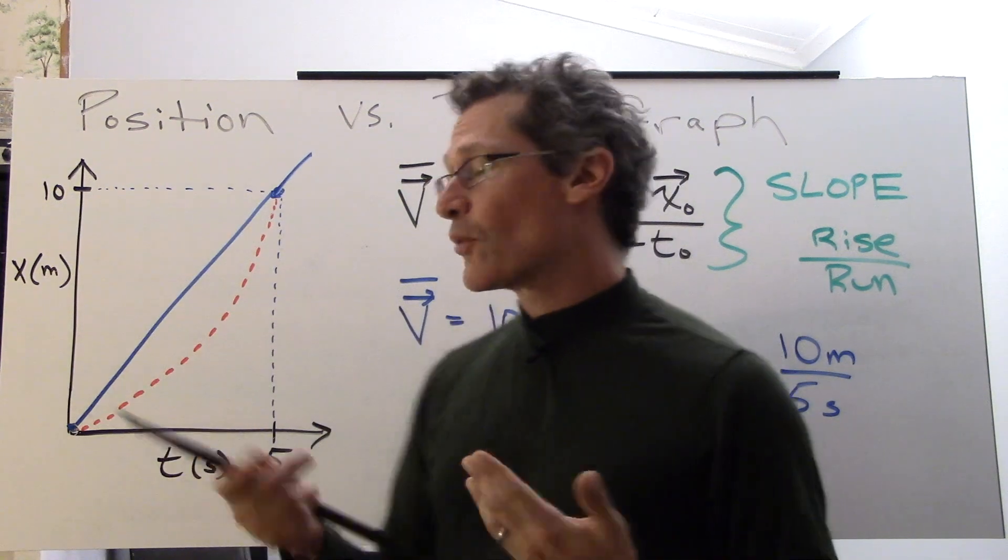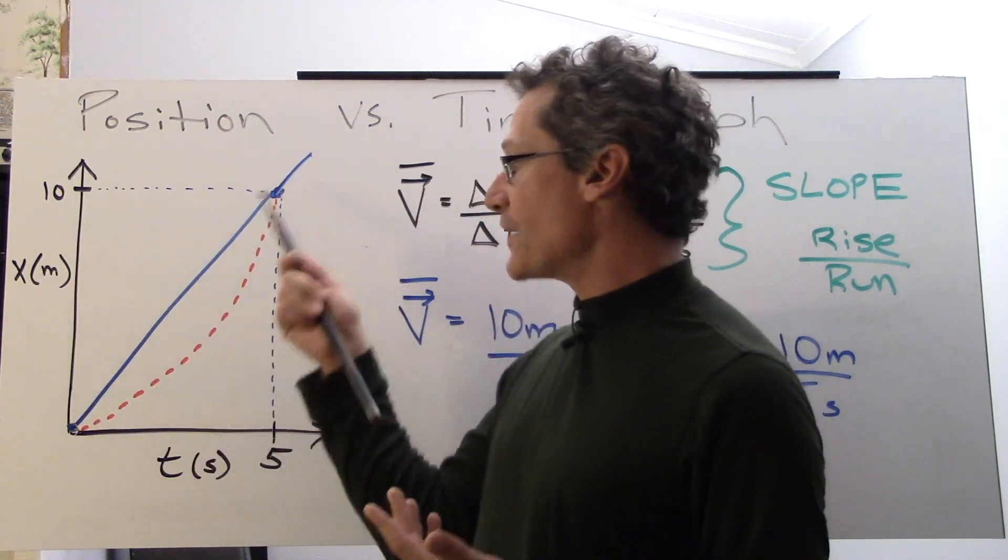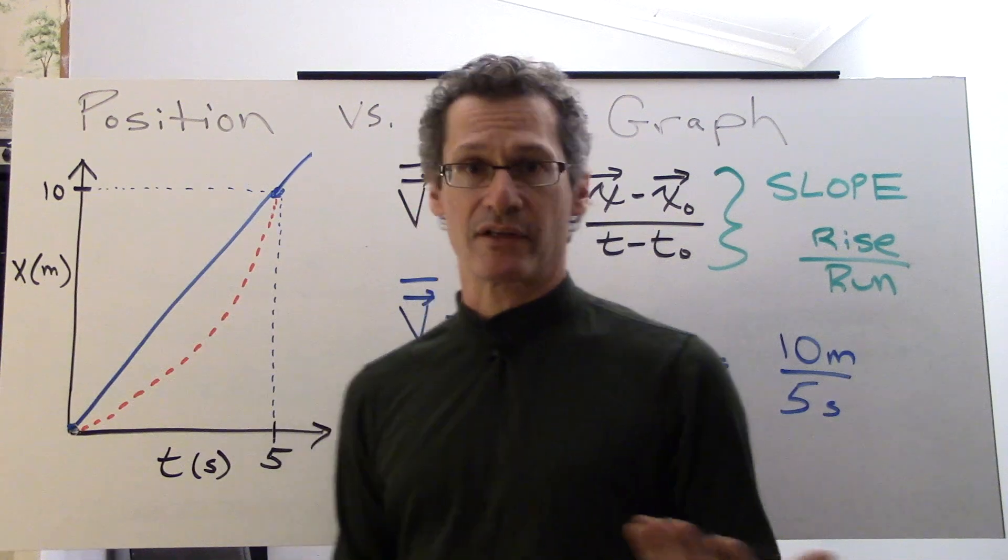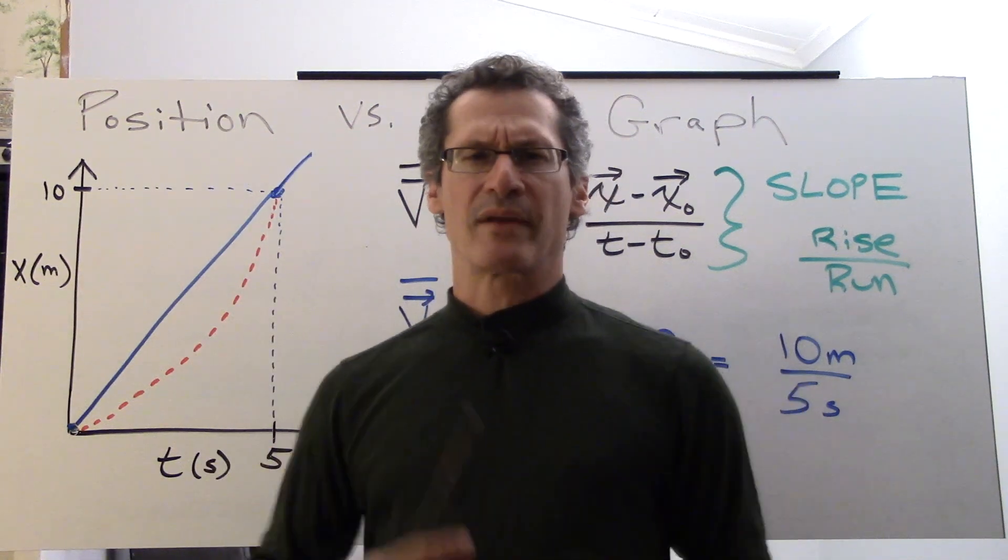But for now we're going to deal with the case where we have a constant velocity where the constant velocity is the same as the average velocity. One more example.